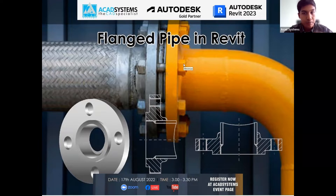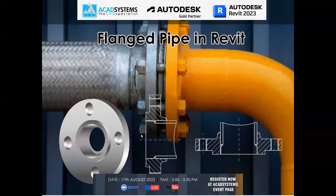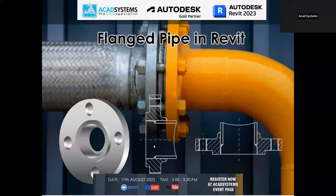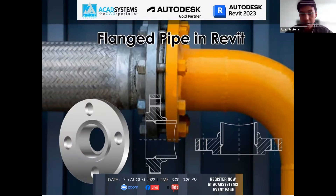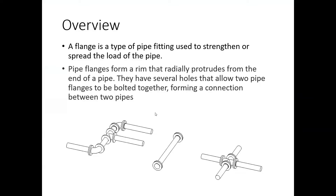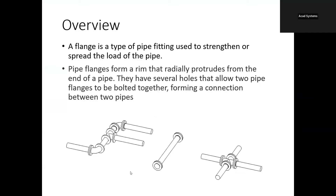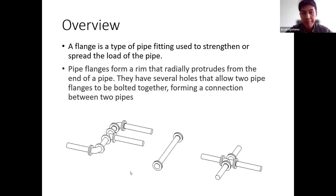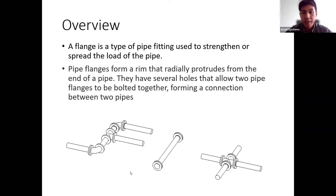Today we are going to discuss about flange pipe in Revit, specifically on how to apply them into our pipe systems. A little bit of overview before we get started: a flange is a type of pipe fitting used to strengthen or spread the load of the pipe. Pipe flanges form a rim that radially protrudes from the end of a pipe. There are several holes that allow two pipe flanges to be bolted together, forming a connection between two pipes.